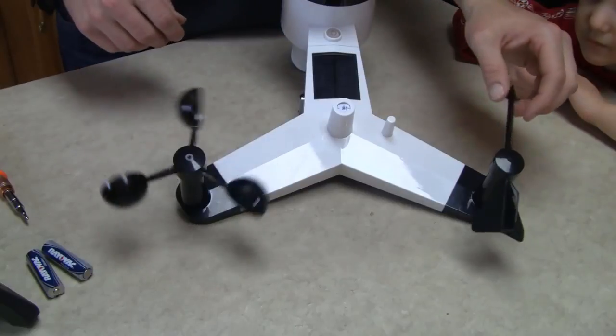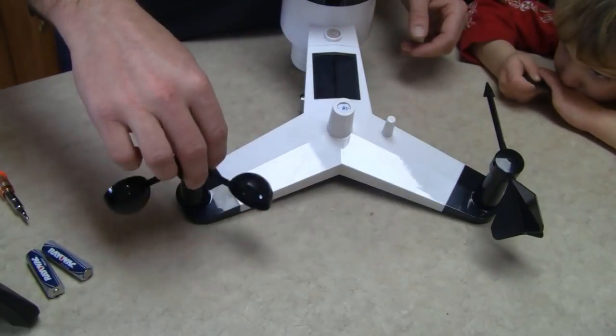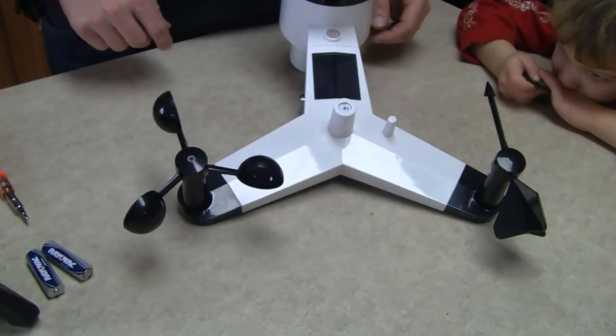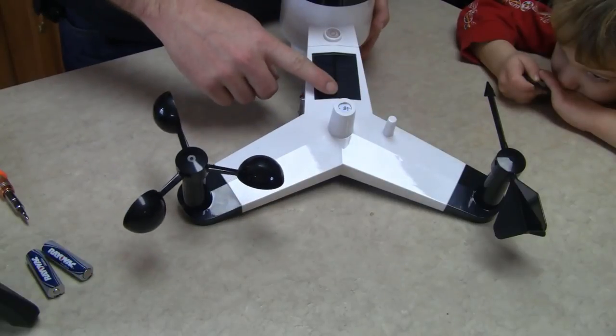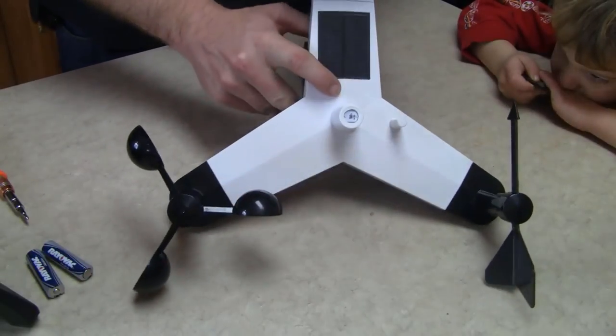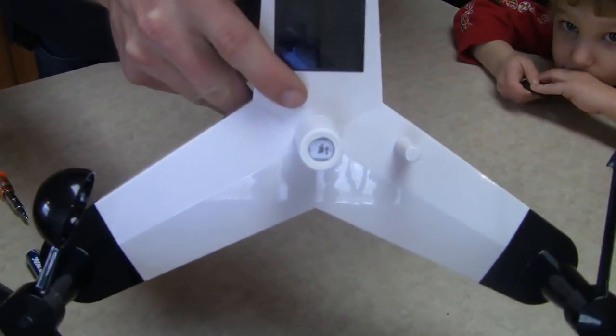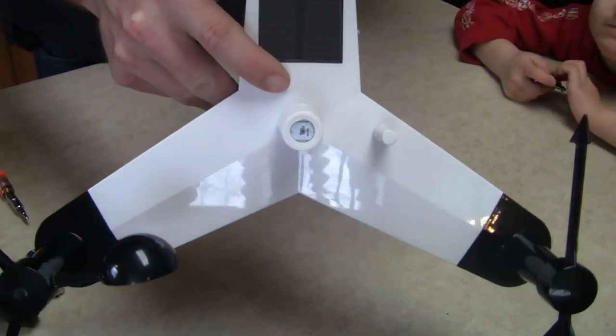There you go. You've got your wind direction and your air speed. One thing to note is there's a north arrow here. When you install, you want to make sure this is pointing north.